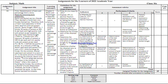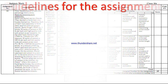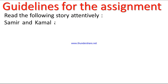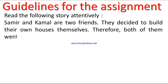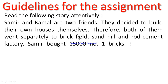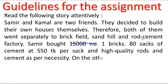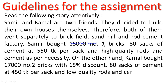Let's see the instructions for the assignment. Guidelines: Read the following story attentively. Samir and Kamal are two friends. They decided to build their own houses themselves. Both of them went separately to a Brickfield, Sand Hill, and Rod Cement Factory. Samir bought 15,000 number-one bricks, 80 sacks of cement at 550 taka per sack, and high-quality rod and cement as per necessity. On the other hand, Kamal bought 17,000 number-two bricks with a 15% discount.